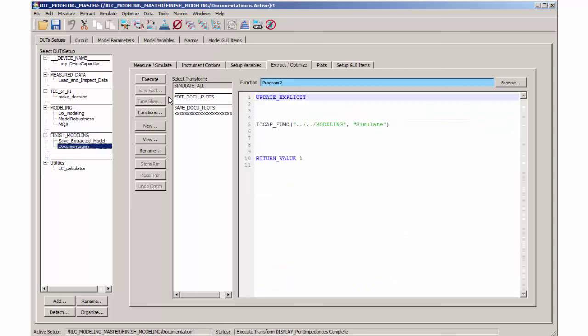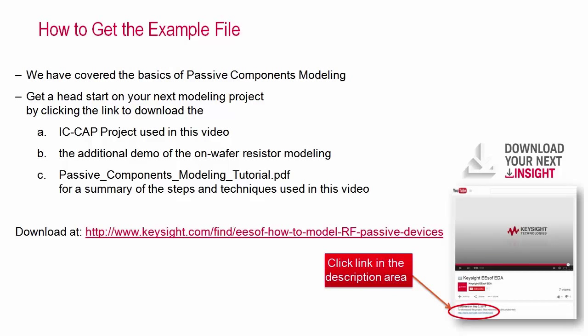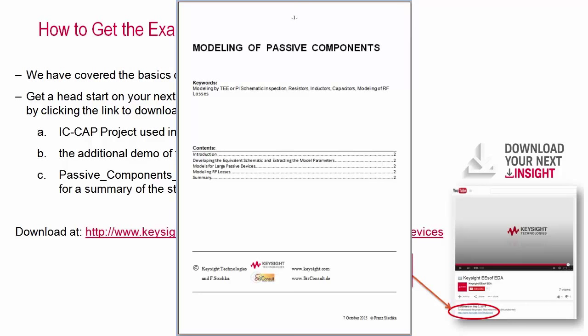This ends my demonstration. We covered how to develop a schematic for passive components out of measurements and I showed you a sequence of model parameter extraction, model verifications and final documentation. You are invited to download the IC-CAP model file used in this video example together with the additional demo of the on-wafer resistor modeling and a tutorial about passive components modeling. Thank you and do not hesitate to contact Keysight Technologies for more information.